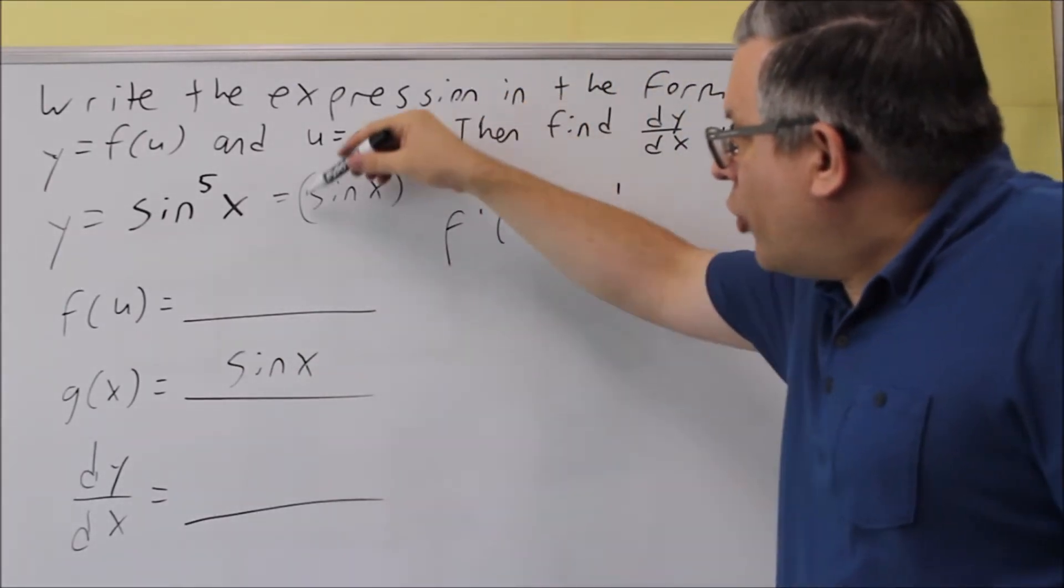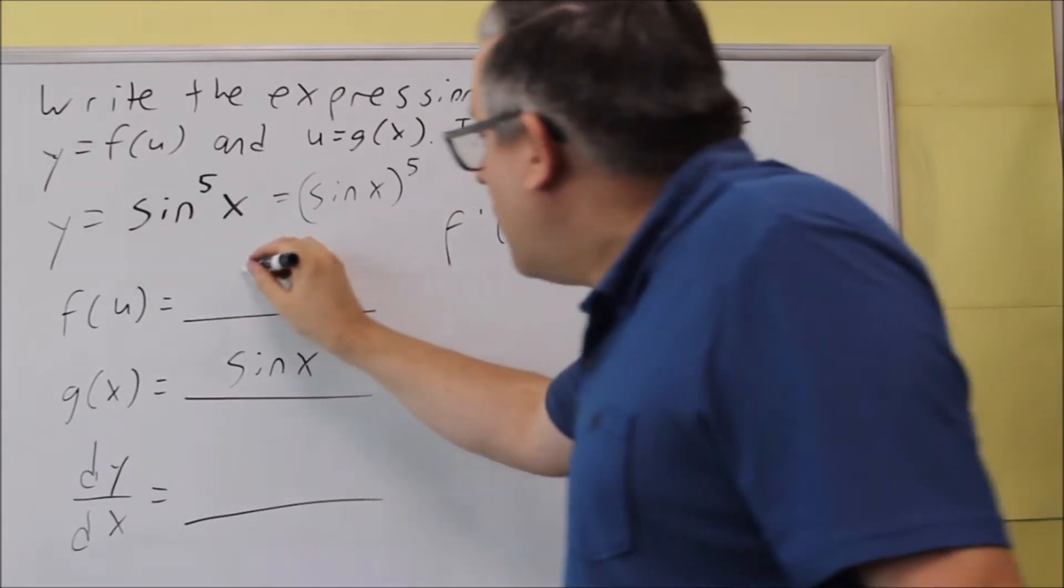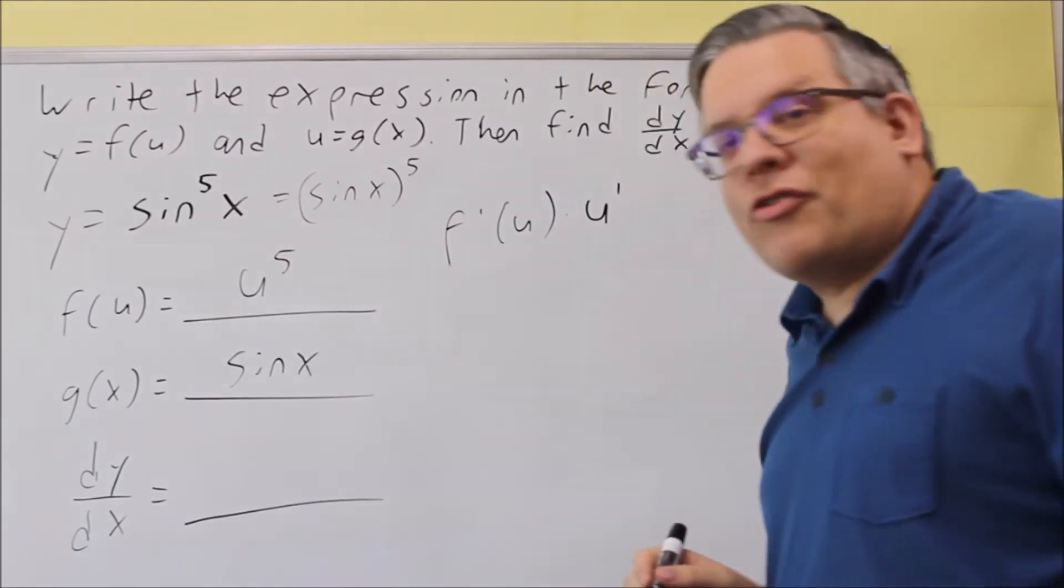And if we get rid of this sine X and replace it with a U, then we're going to get the F function. That's going to be U to the fifth.